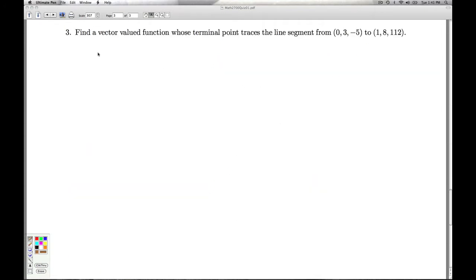Okay, number 3, the last question on the checkpoint quiz. Find a vector-valued function whose terminal point traces the line segment from this point to that point. So we sort of have an overriding mantra here when we talk about lines, is we look at where we start plus displacement times t. t goes from 0 to 1. And so by displacement, what I mean is where I end minus where I start.